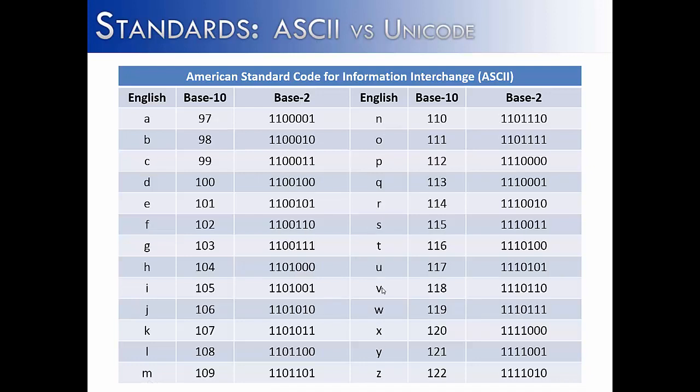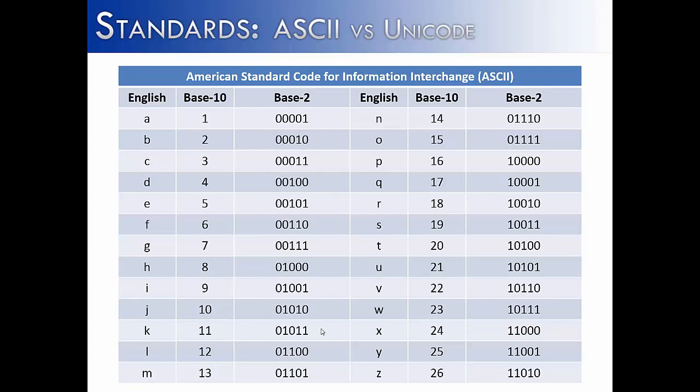ASCII doesn't just have capital letters — it also has lowercase letters. Lowercase starts at 97 and goes to 122. There is a base 2 equivalent as well. Just like with capital A, watch what happens when we remove the first two binary digits: you convert it into base 10 and you get 1, 2, 3, 4, 5, 6, knowing that corresponds with the letter's position in the alphabet. So the 16th letter in the alphabet is P, or the 23rd letter in the alphabet is W.